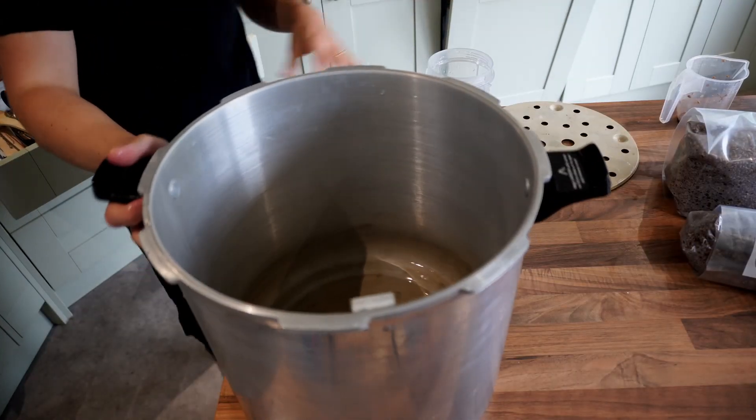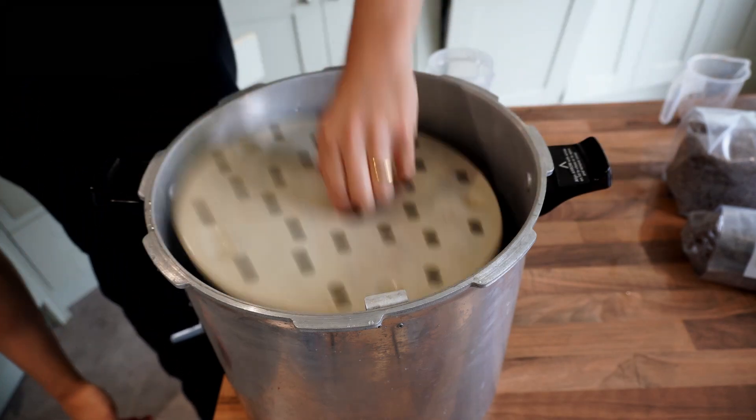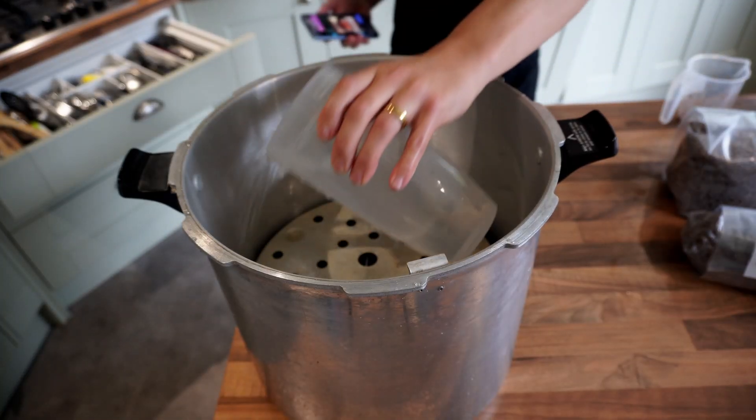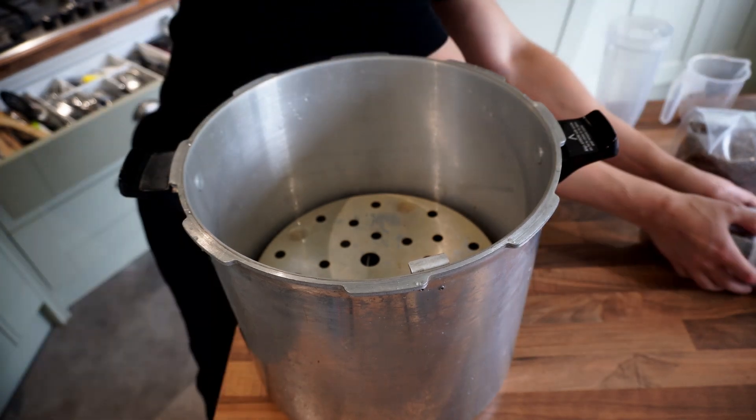You want to ensure the bags are raised quite high up in the pressure cooker so that they aren't sitting in the water. You want to add about four liters of water to the pressure cooker because this will be a longer cycle because of the size of the bags.